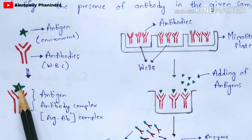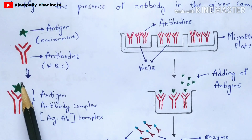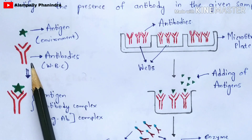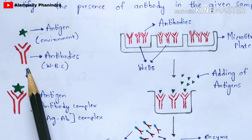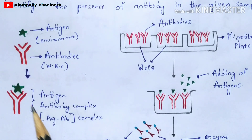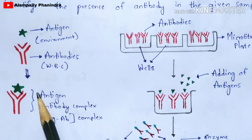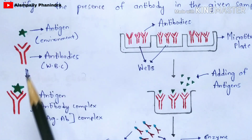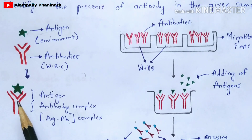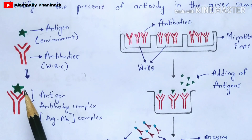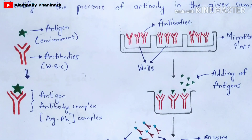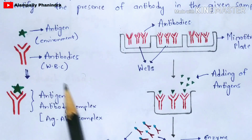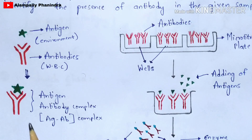Once the antigen-antibody complex is formed, the antibody starts killing and slicing the antigen. Once the antigen is killed, it doesn't cause any disease to our body. If antibodies are not produced, the antigen affects the tissues and the entire human body. This is the basic introduction to antigen-antibody interaction.